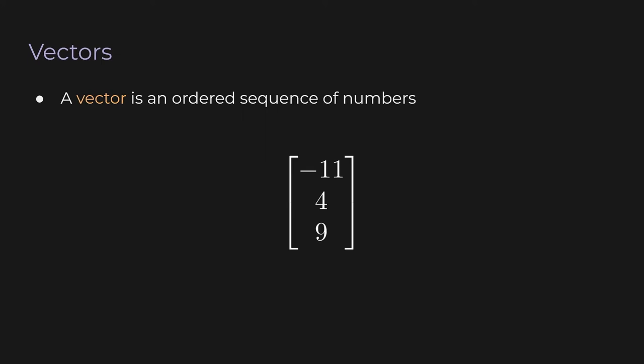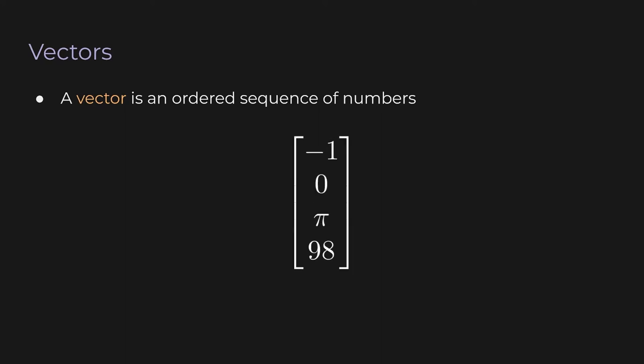Vectors can have different numbers of entries — this one has 3, so you can call it a 3-vector. This one has 4, so it's a 4-vector, and so on. The elements, at least in this course, are all going to be real numbers — irrational or rational, any real number. I can also have the elements be variables themselves.